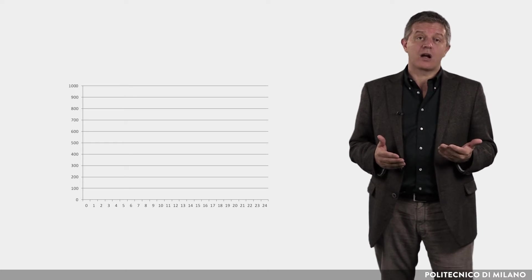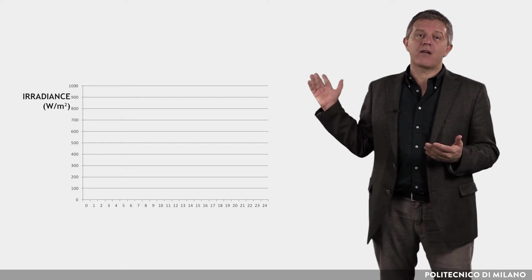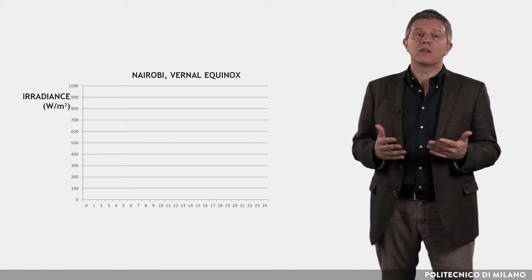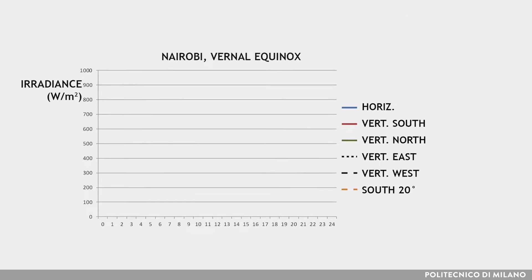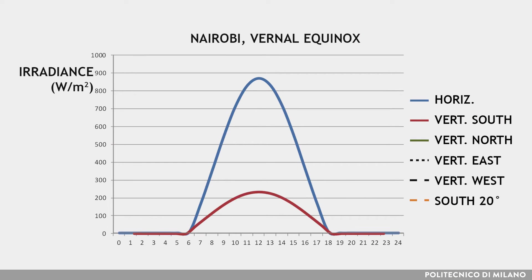For example, in the chart you can see the solar irradiance trend in Nairobi during the spring equinox on surfaces differently inclined and oriented: horizontal, vertical south, vertical north, vertical east, vertical west, and south-facing 20 degrees tilted.